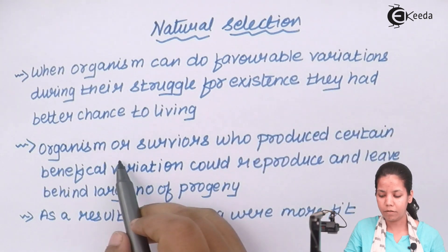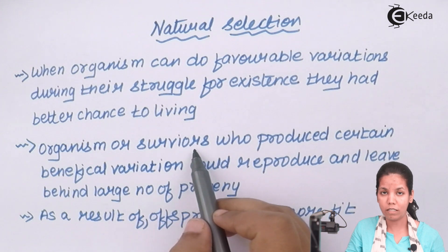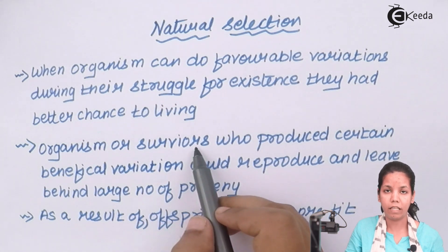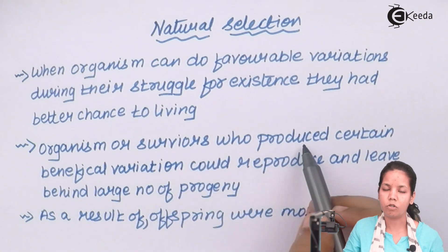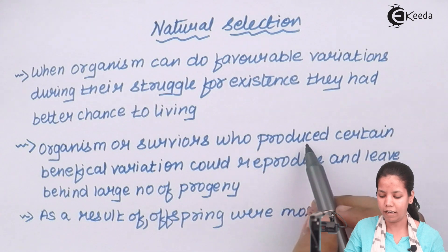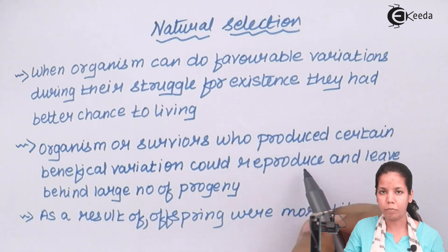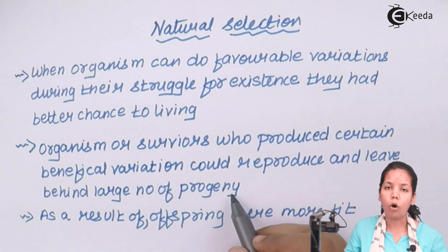Now organisms or survivors who actually survived all the natural calamities or the man-made calamities for their existence, they produced certain favourable variations or adjustments to that environment and they could reproduce or give birth and leave behind their progeny or offsprings.